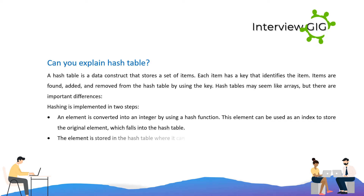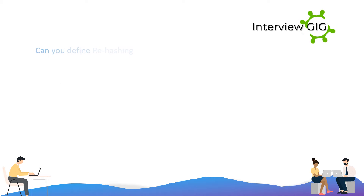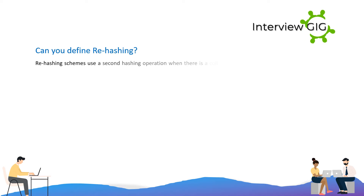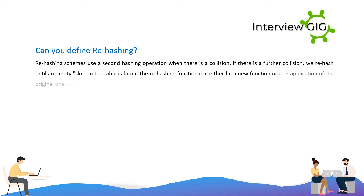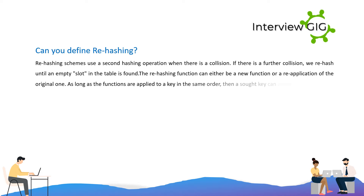The element is stored in the hash table where it can be quickly retrieved using the hash key. Can you define rehashing? Rehashing schemes use a second hashing operation when there is a collision. If there is a further collision, we rehash until an empty slot in the table is found. The rehashing function can either be a new function or a reapplication of the original one. As long as the functions are applied to a key in the same order, then a sought key can always be located.